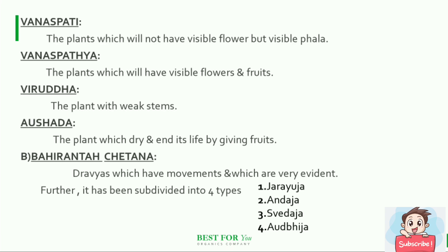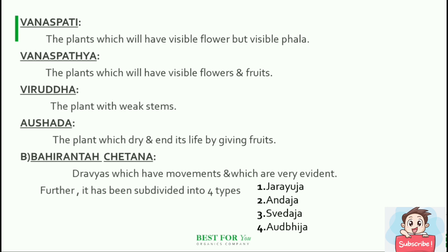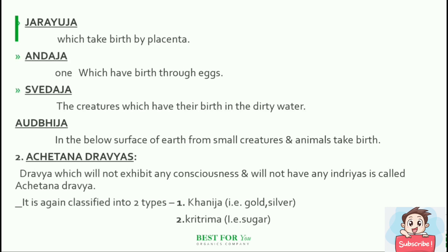Vanaspati — plants which have no visible flower but have visible phala. Vanaspatya — plants which have no visible flowers and also no visible fruits. Viruddha — plants with weak stems. Aushadha — plants which dry and end their life after giving fruits. Bahiranta Chetana Dravyas are those which have movements that are very evident, subdivided into four types: Jarayuja — birth by placenta; Andaja — birth through eggs; Svedaja — creatures born in dirty water; and Audbhija — small creatures and animals that take birth below the surface of the earth.